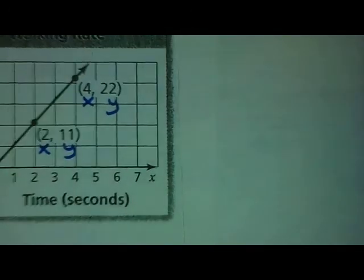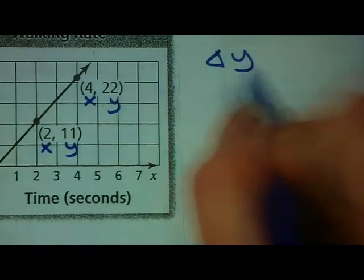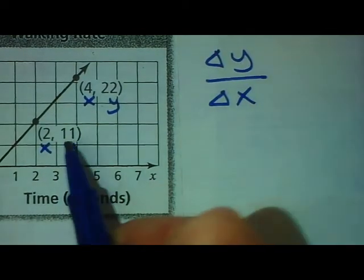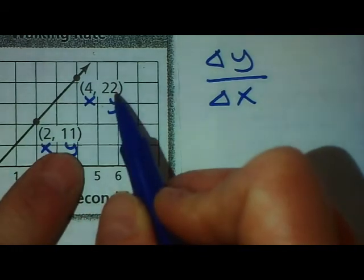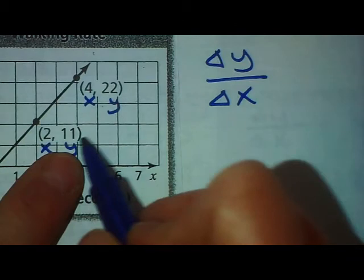We said in order to figure out a unit rate we take the change in y and divide it by the change in x. If I'm going from this point to this point, if I go from 11 to 22, I'm asking you 11 plus what gives you 22?